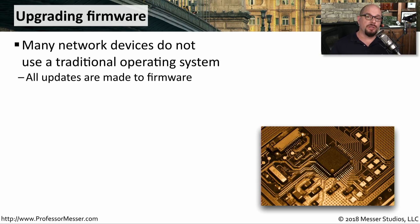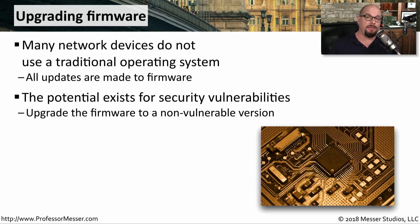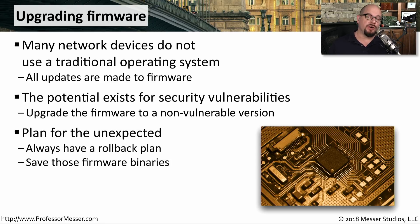Many of the routers, switches, and firewalls we're adding to a network are not using a traditional operating system — they aren't running Windows or Linux underneath. If we need to upgrade those systems, we're usually performing an upgrade to the firmware. Make sure you check with the manufacturer that you're using a version of firmware that does not have any known vulnerabilities. Sometimes you may find yourself upgrading to a version that already has another upgrade available. Although we're often upgrading firmware to solve problems, new firmware could introduce an entirely new set of issues, so always keep backups of previous firmware versions so you can easily downgrade if needed.